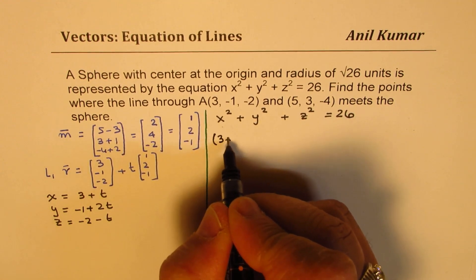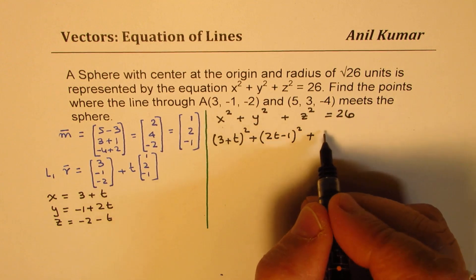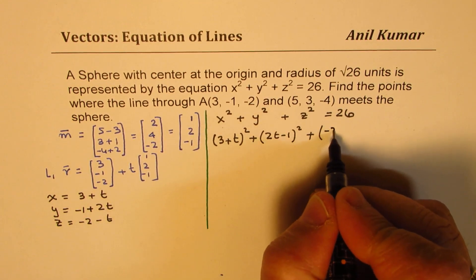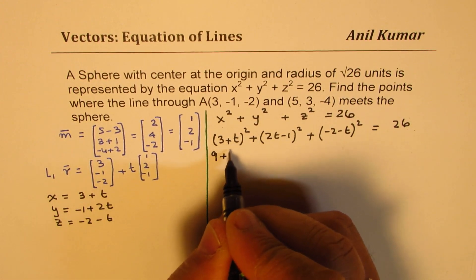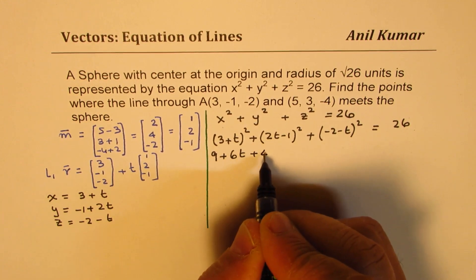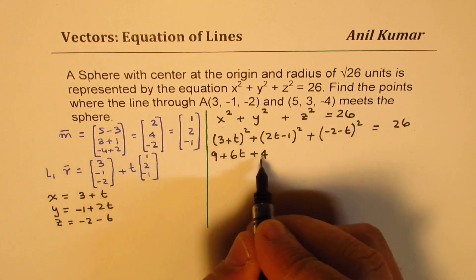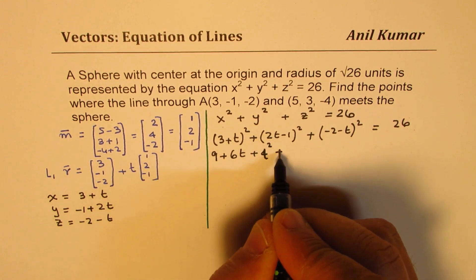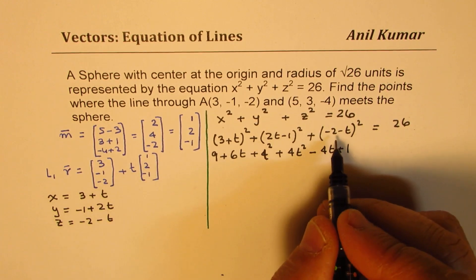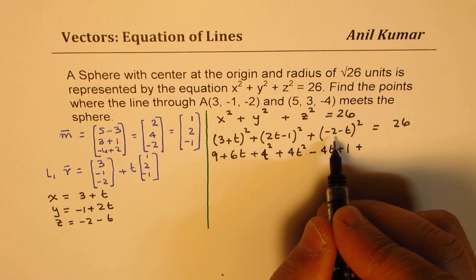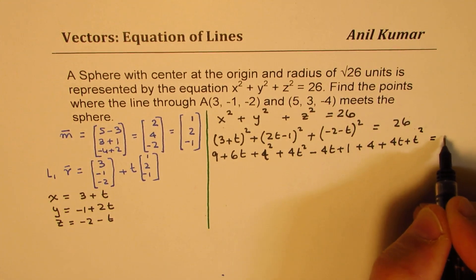Substituting these into the equation of the sphere, we get (3 plus t) squared plus (2t minus 1) squared plus (minus 2 minus t) squared equals 26. Expanding, we get 9 plus 6t plus t squared, then 4t squared minus 4t plus 1, and then (t plus 2) squared which gives 4 plus 4t plus t squared, equals 26.